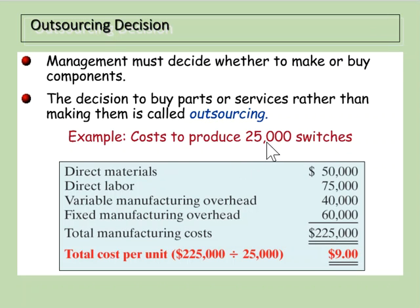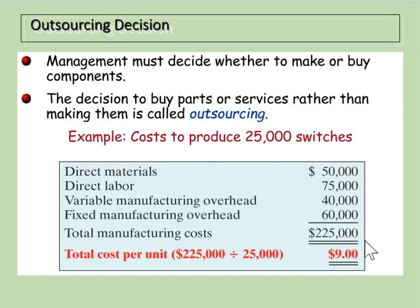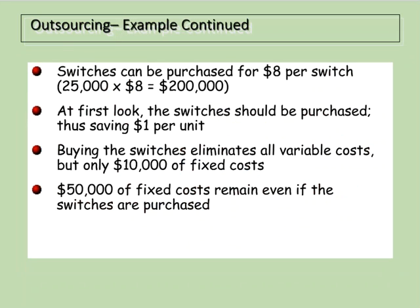Here's an example: this particular company makes switches, and they're considering whether they should outsource them. Here's a breakdown of the cost of their switches: direct materials $50,000, direct labor $75,000, variable manufacturing overhead $40,000, fixed manufacturing overhead $60,000 — so total manufacturing costs are $225,000. Dividing $225,000 by the 25,000 switches they're producing gives a total cost per unit of nine dollars.